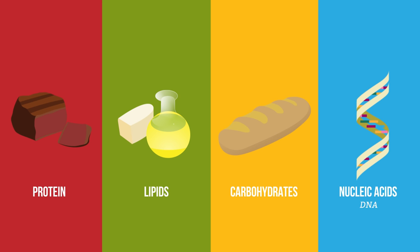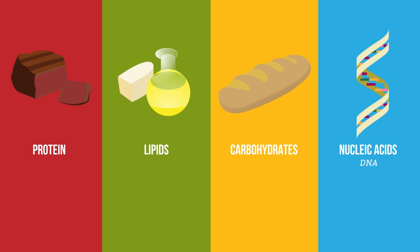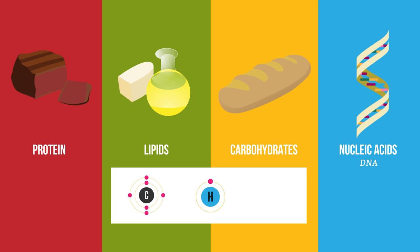So what are these all made of? Well, carbohydrates and lipids are really simple. They just contain three elements: carbon, hydrogen and oxygen.